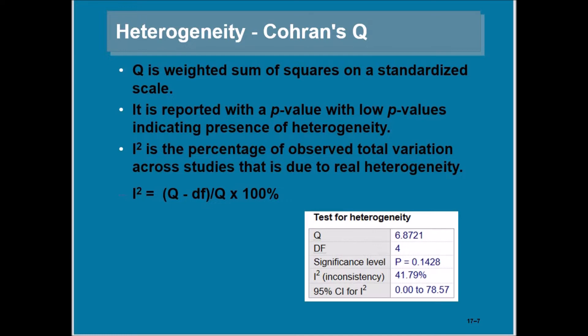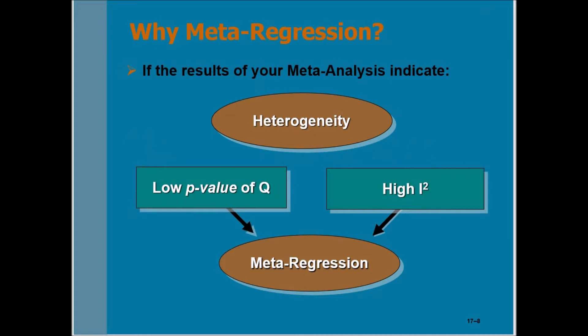Why do we need to use meta-regression? If your results of meta-analysis indicate a high level of heterogeneity—that is, you get a low p-value of Cochran's Q and high I-square—then you are recommended to conduct meta-regression.